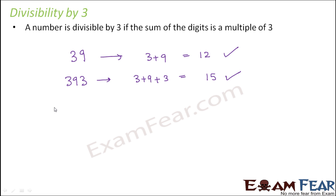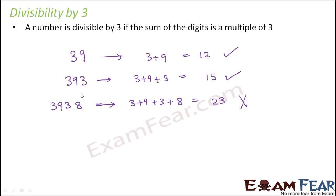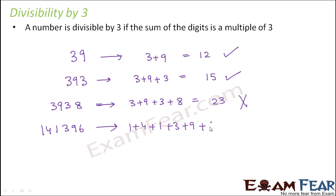Let's take another number, 3938. The sum of the digits is 3 plus 9 plus 3 plus 8, which equals 23, and 23 is not divisible by 3, so 3938 is not divisible by 3. For an even bigger number, 141396: 1 plus 4 plus 1 plus 3 plus 9 plus 6 equals 24, which is divisible by 3, so 141396 is also divisible by 3.